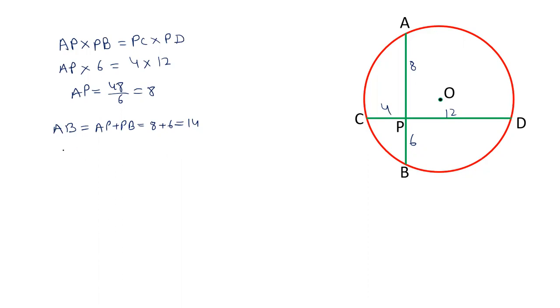So, the two chords are 14. And the second chord is CP plus PD, 4 plus 12 is 16. So, the two chords are 14 and 16 centimeter respectively.